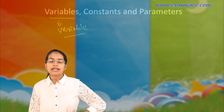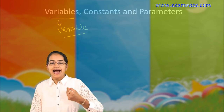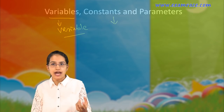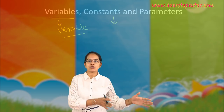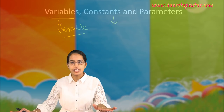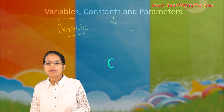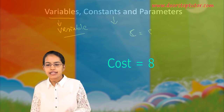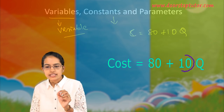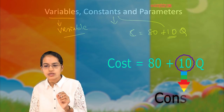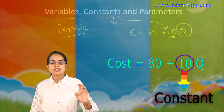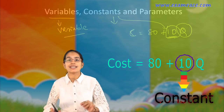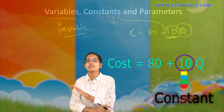When I take any variable and there is a coefficient to that variable, we call it a constant. A constant is the antithesis of a variable — it does not vary. For example, if cost equals 80 plus 10 times quantity, the 10 here is a constant for that quantity. It does not vary.